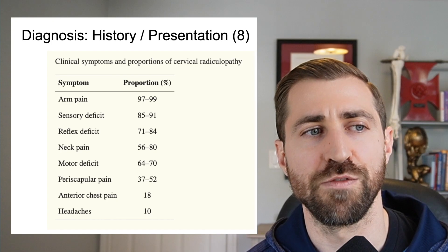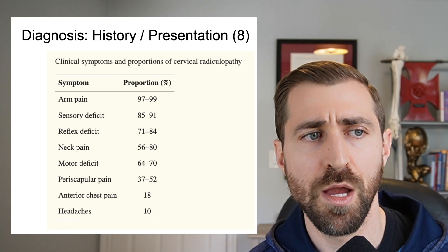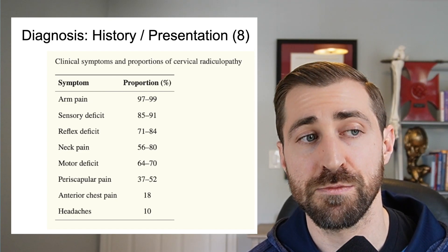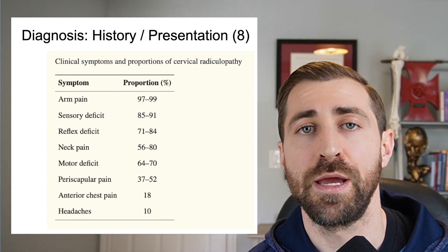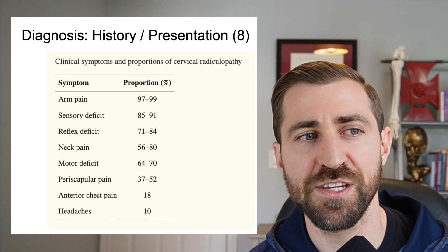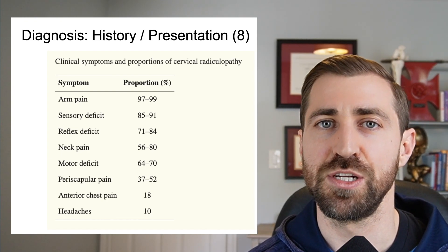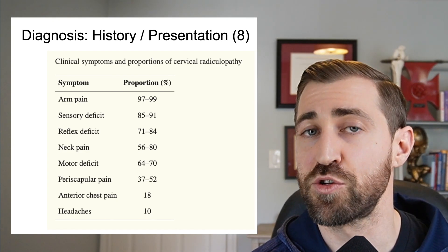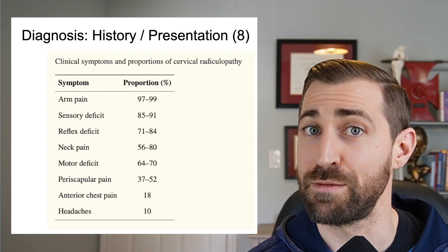The majority of folks with cervical radiculopathy — 97% to 99% — typically have arm pain. Around 85% to 91% tend to have a sensory deficit, so dermatomal changes. Around 71% to 84% tend to have reflex deficits. And around 56% to 80% tend to have neck pain. So you may have some patients that have zero neck pain whatsoever and a bunch of arm pain. Around half to 80% of folks are going to have neck pain with the arm pain, but the most common symptom is not neck pain — it's going to be shoulder and arm pain.